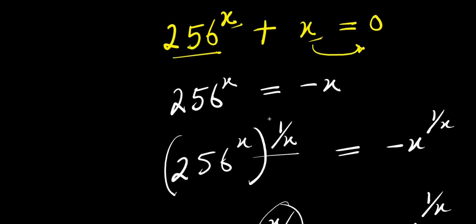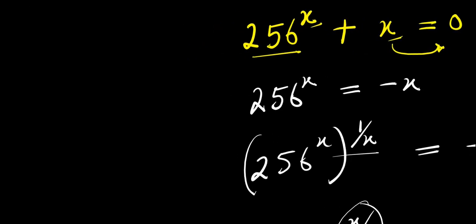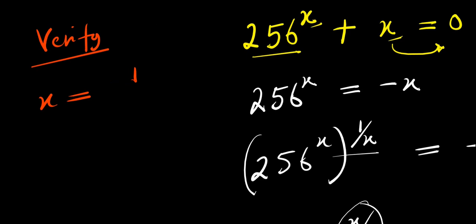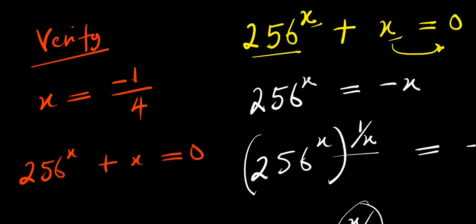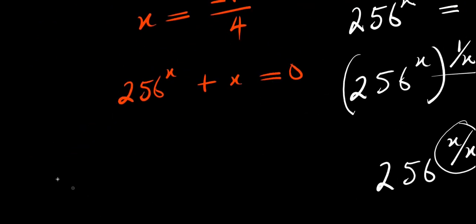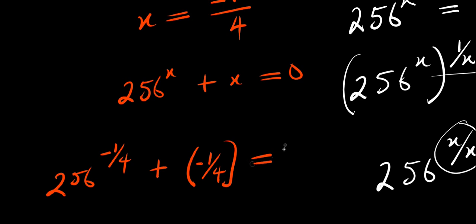And as usual, we are going to check — I'm telling you the truth. Let's verify. I have x equals negative 1 over 4, and this is 256 power x plus x equals 0. So from here we have 256 power negative 1 over 4, plus negative 1 over 4, equals 0.